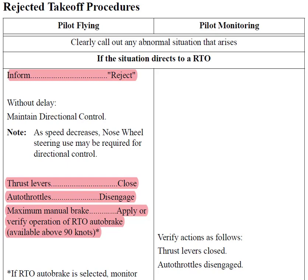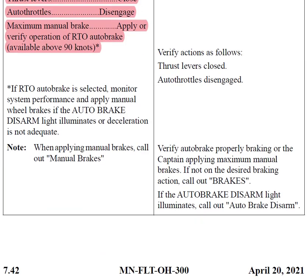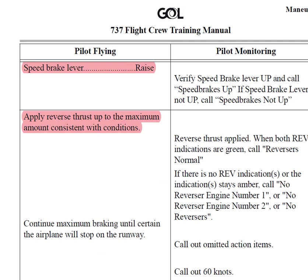Maximum manual brake, apply or verify operation of RTO auto brake, above 90 knots. Speed brake lever, raise. Apply maximum reverse thrust.